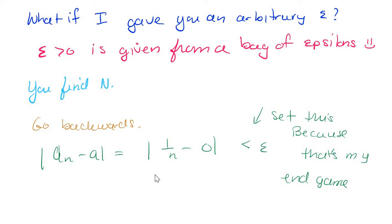I want |a_n - a| to be less than epsilon at some cut point. That's my N game. And then I just do the math and solve for the little n.